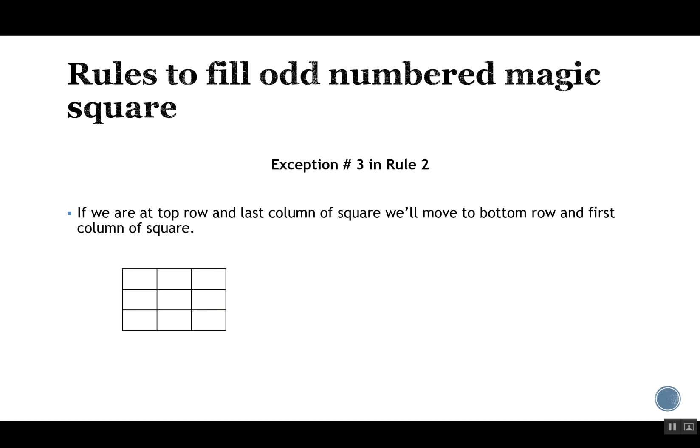Exception three: if we are at both the top row and the last column of the square, we move to the bottom row and the first column of the square. This is essentially a combination of exceptions one and two. Just like rule one, this exception can only happen once in any magic square, since there is only one top-right corner cell.